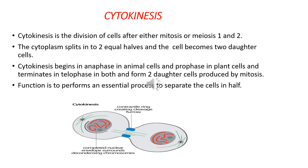A completed nuclear envelope will surround the decondensed chromosomes, and a contractile ring or cleavage furrow will form in the center and split the cell into two. In animal cells it begins in anaphase; in plant cells it begins in prophase. But in both animal and plant cells it ends in telophase, forming two daughter cells.